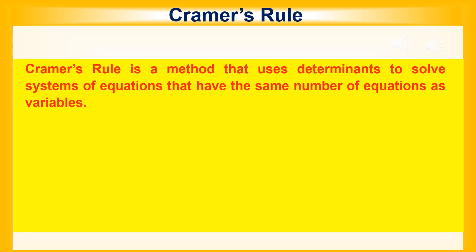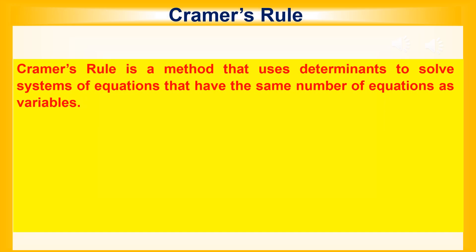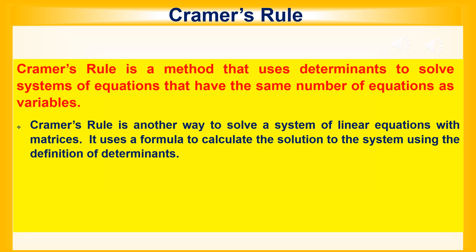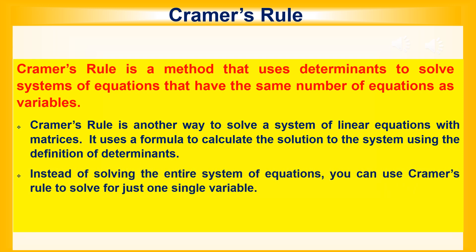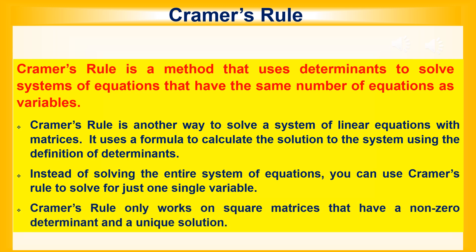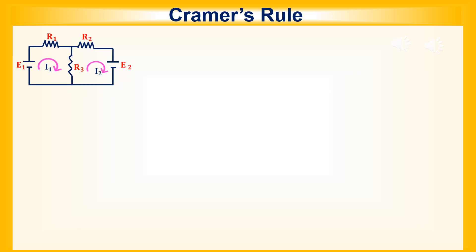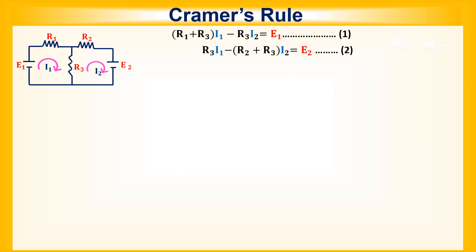Cramer's rule is a method that uses determinants to solve a system of equations that has the same number of equations as variables. It uses a formula based on determinants to calculate the solution to the system, and can be used to solve for just one single variable instead of solving the entire system. Cramer's rule only works on square matrices that have a non-zero determinant and a unique solution. For example, consider two linear equations obtained after applying mesh analysis to a DC circuit.